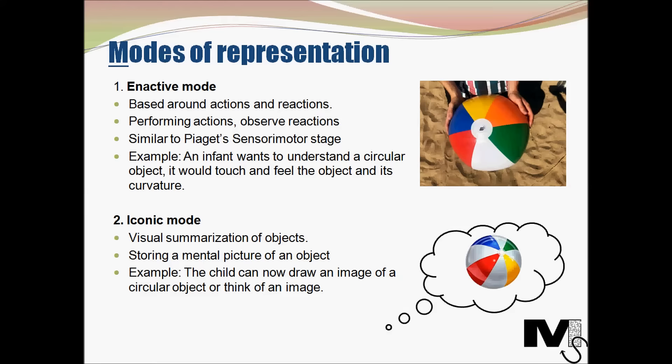The next mode is the iconic mode. This mode is based upon visual summarization of objects — in other words, we can link our experience with objects to pictures or visualizations. The ability to store a mental picture of objects in the mind comes into play here, and this tends to be the dominant mode for children between the ages of 1 and 6. For example, the child who needed to feel a circular object can now draw or think of the image of a ball. This mode also comes into play when adults try to learn a new skill and would appreciate the use of images and visualizations to aid their learning.